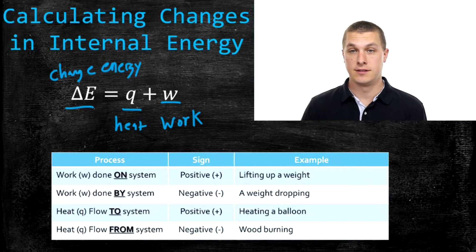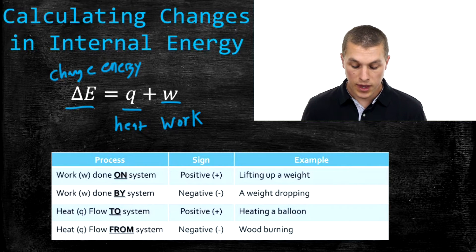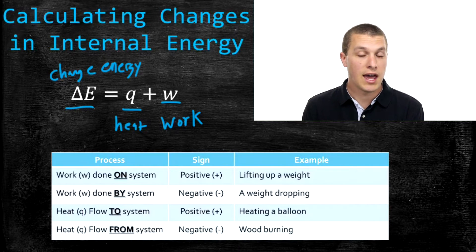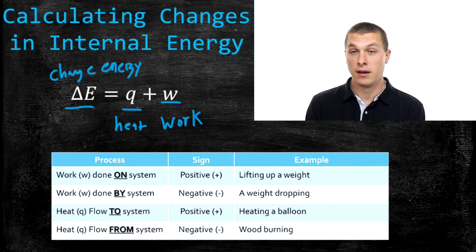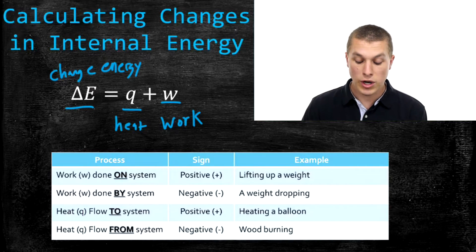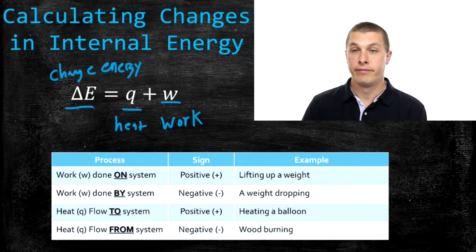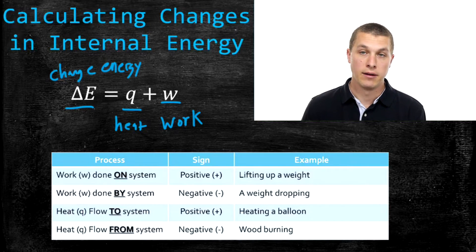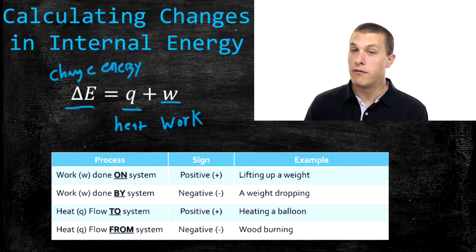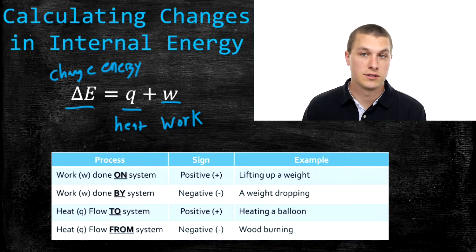If work is done on a system — and the system is just whatever we're interested in — that's said to have a positive change. For example, if I lift up a weight, I'm doing work and increasing the energy of that weight, namely the gravitational potential energy. On the other hand, if work is done by a system, that decreases its energy. An example would be dropping a weight — that is work done by the system, which reduces the energy of the weight and transfers it to the floor, which is basically the surroundings.